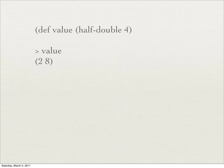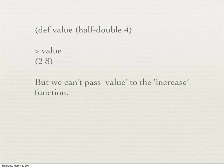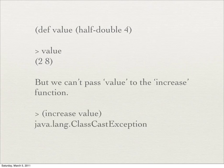Just an example of what half-double looks like as its result: you assign the result of half-double of four to the symbol 'value'. Now, you can't pass value to the increase function, because value is a list of integers, not a single integer. And increase is expecting a single integer. If you try to do that in Clojure, you get a class cast exception.